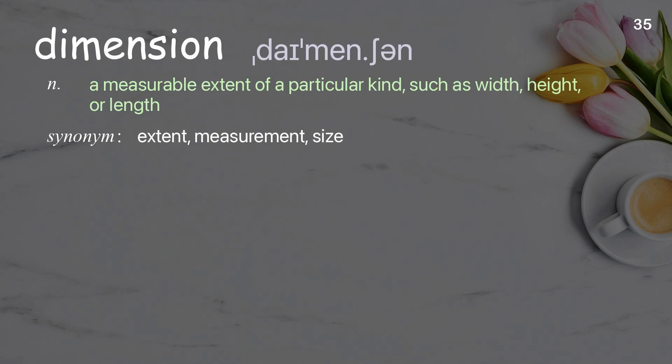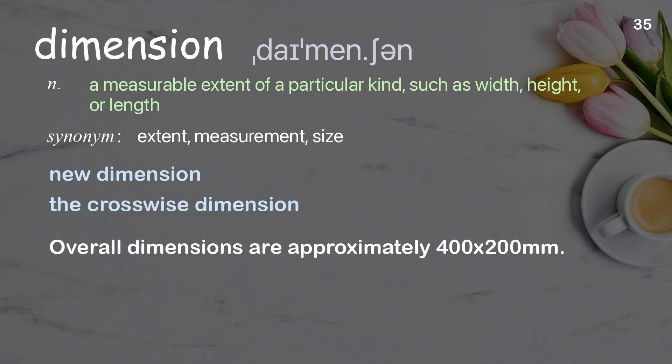Dimension: A measurable extent of a particular kind, such as width, height, or length. Examples: new dimension, the crosswise dimension. Overall dimensions are approximately 400 by 200 mm.